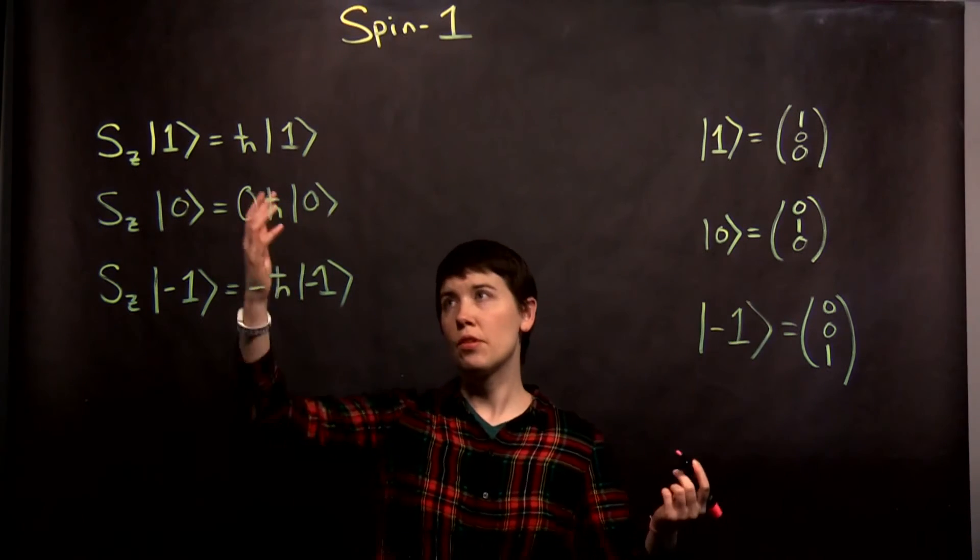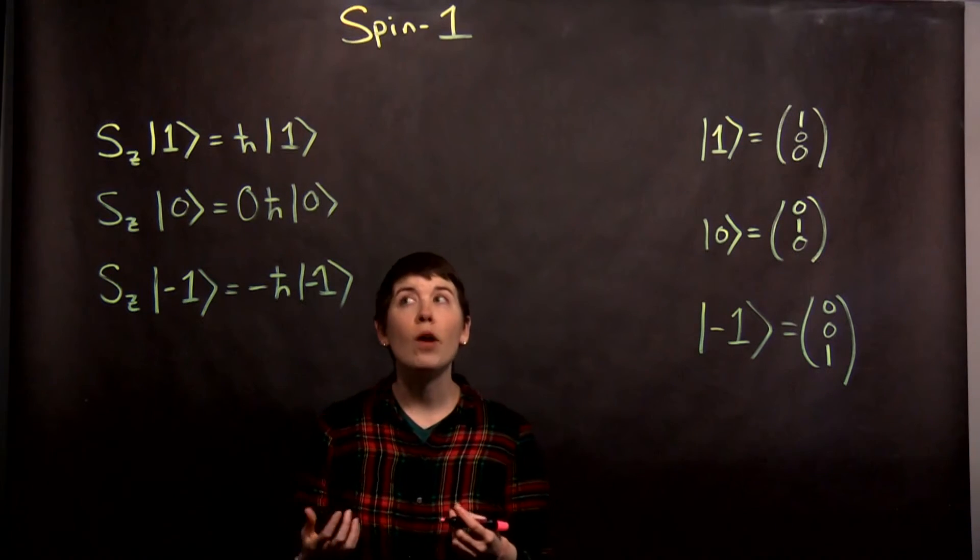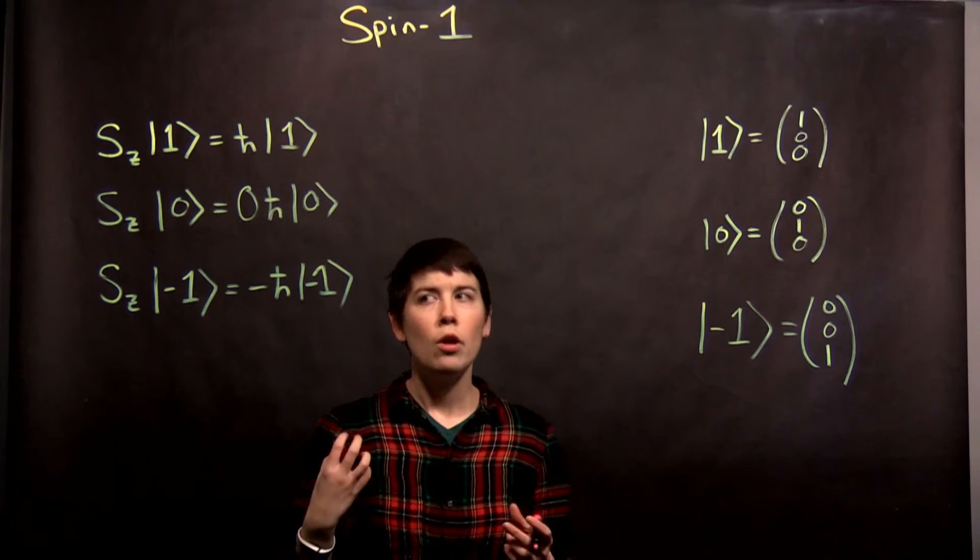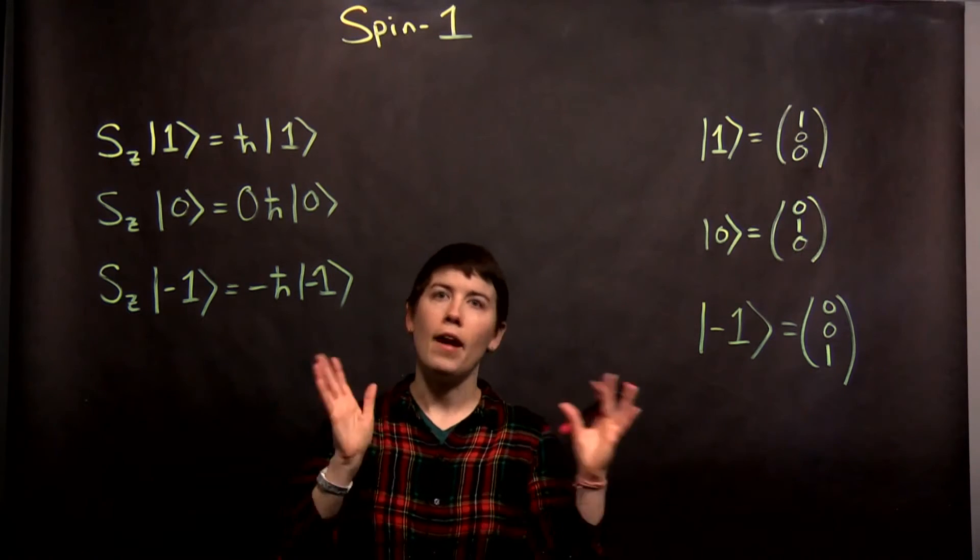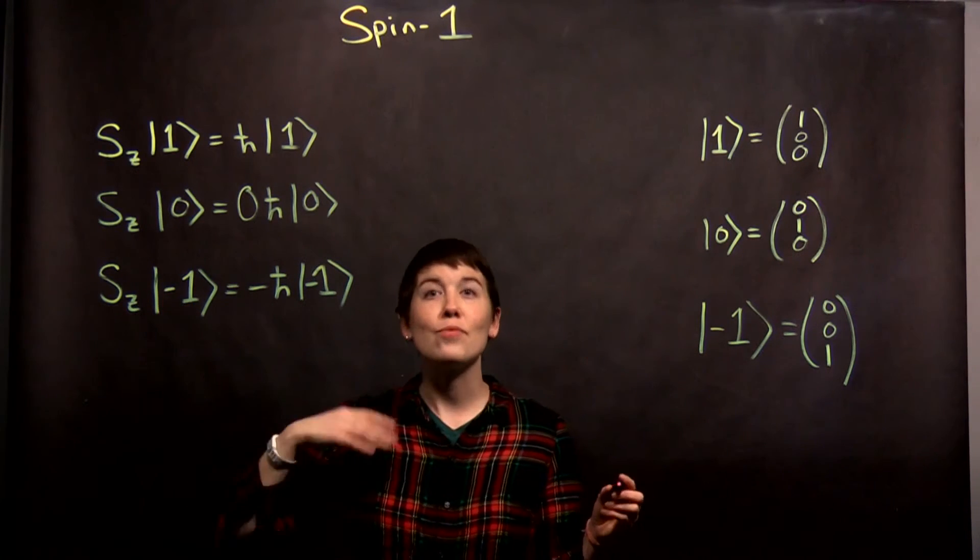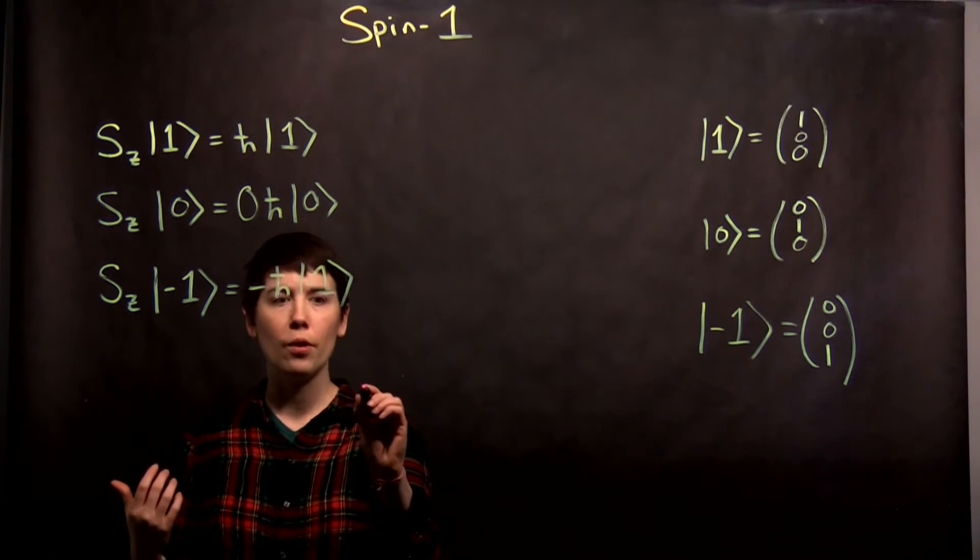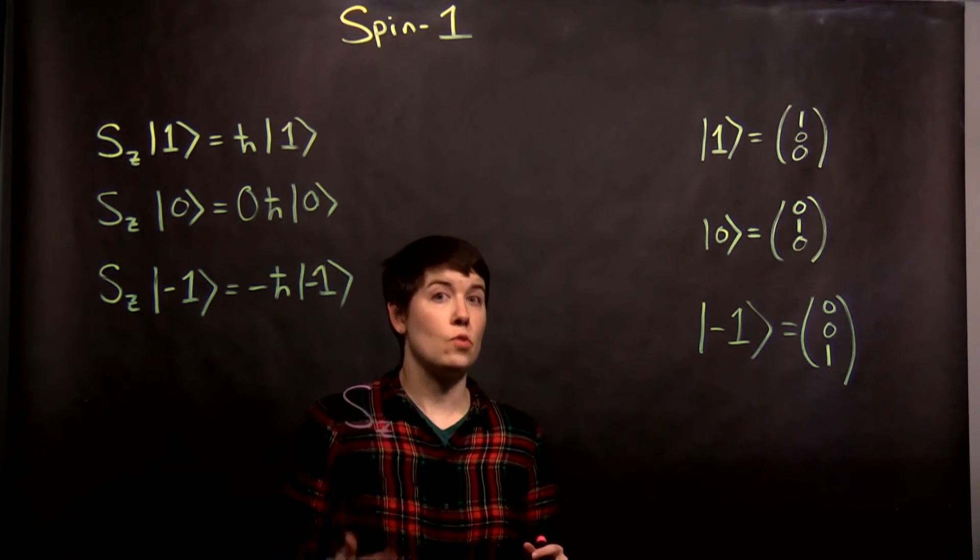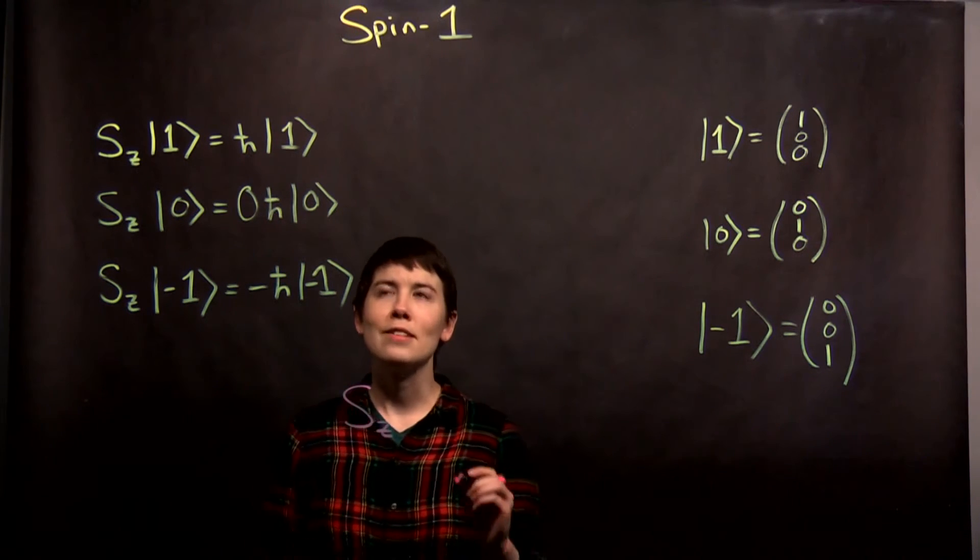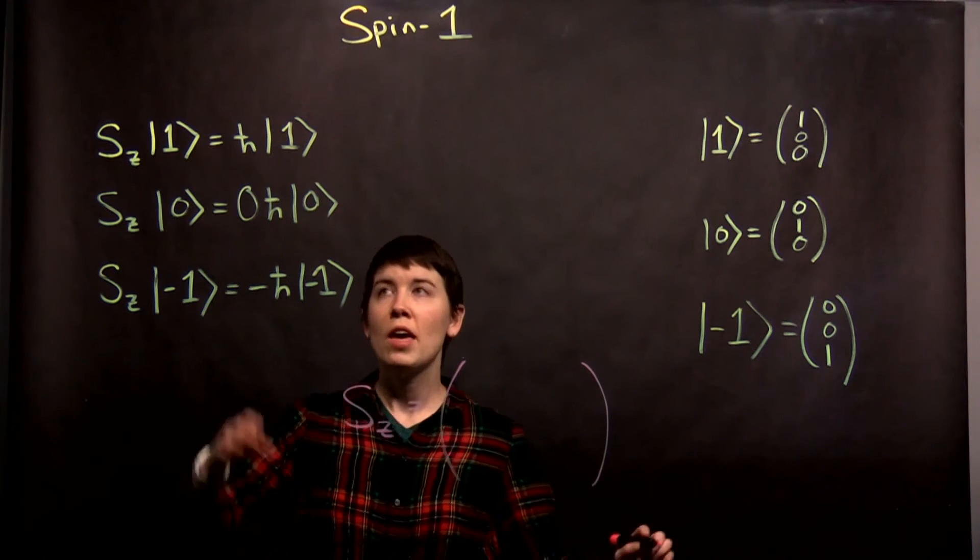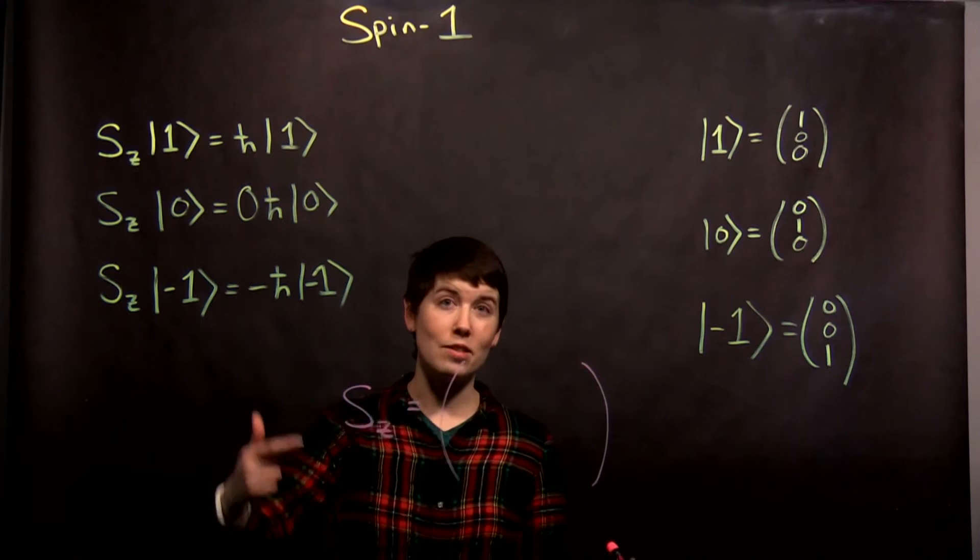So, three states, three options. We can write this operator based on this in the z basis. So now x and y are going to be harder, haven't written those measurements down yet, but we can write down what this operator is in its own basis very easily. So we know that an operator in a basis where its basis vectors are the eigenstates is just fully diagonal. And so it's going to be a three by three matrix, and the diagonal elements are these eigenvalues.